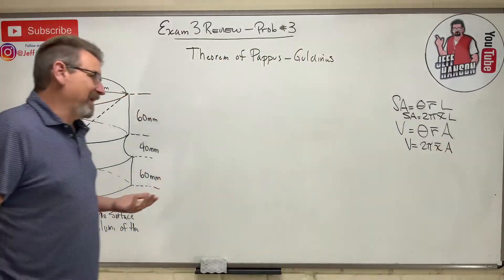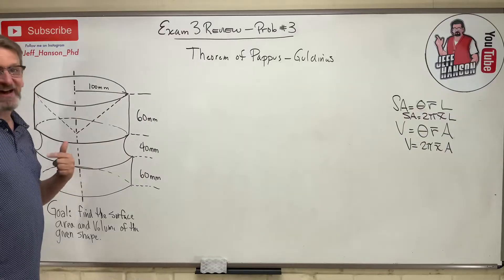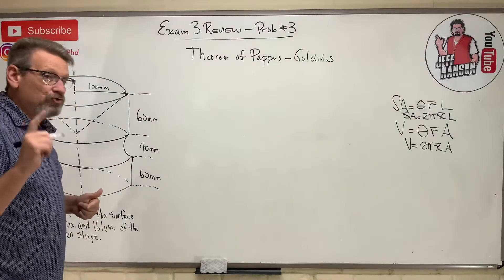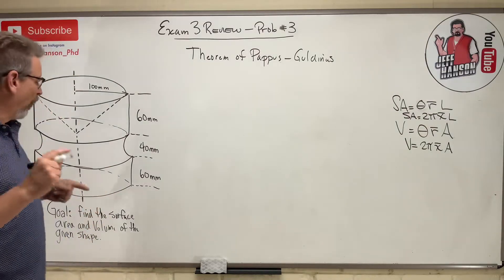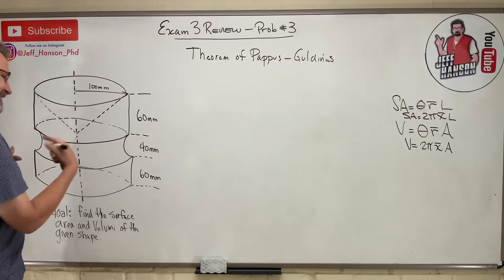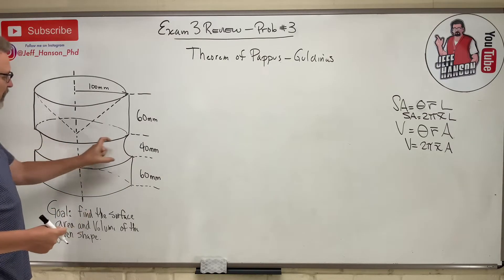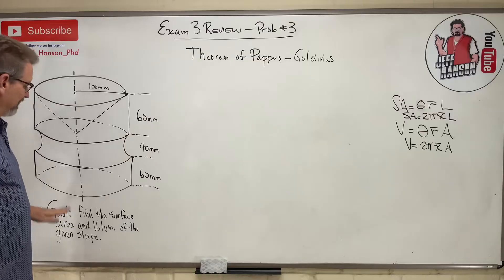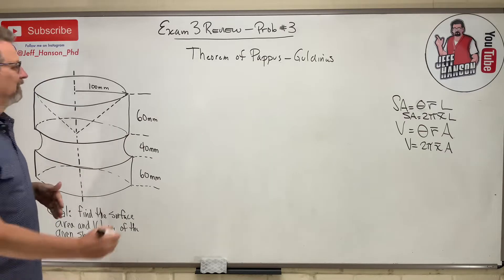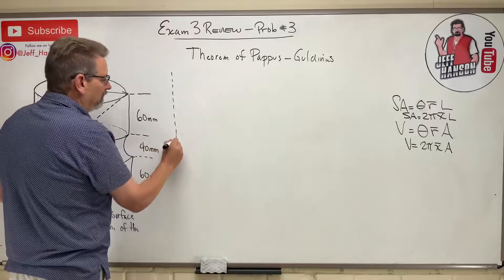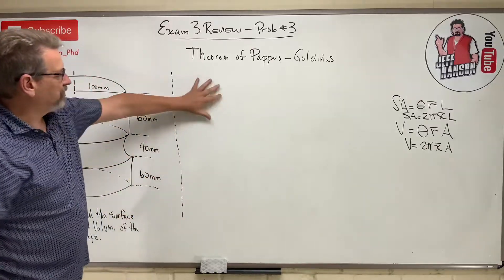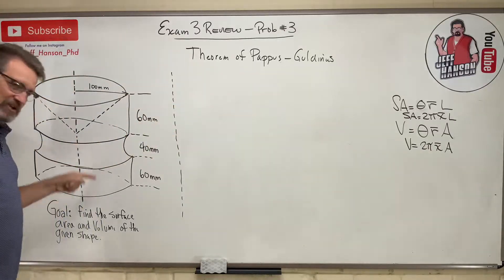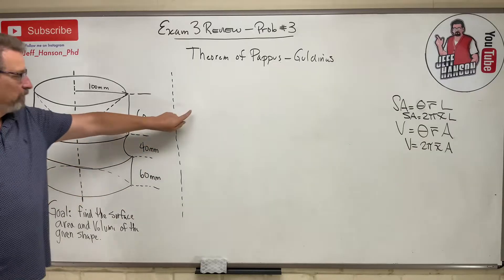How do you solve these problems? Step one: draw the generating shape — what shape is going to make this thing? This is like a cylinder with a hemispherical groove around it, and one end has a cone cut into it; it's flat on the bottom. Here's the axis of rotation — what shape over here, when rotated all the way around, would sweep out that shape? Push pause and draw it.